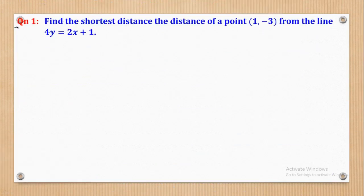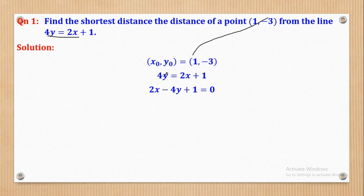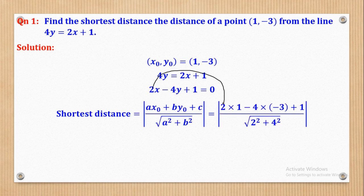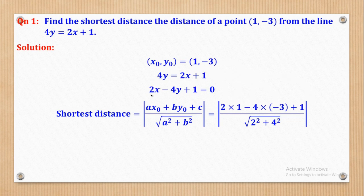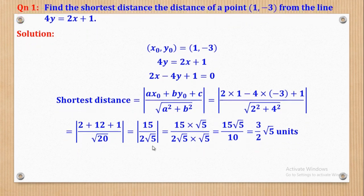Question 1: Find the shortest distance of a given point from a given line. Identify (x₀, y₀) from the point, then rearrange the line equation to ax + by + c = 0 form. Substitute into the formula — numerator is 2x₀ − 4y₀ + 1, denominator is √(2² + 4²). Simplifying gives a surd in the denominator, so rationalize to get the final distance. Question 2: Same procedure; substituting gives (3×4 + 4×(−7) − 9) / √(3² + 4²) = |−5| / 5 = 1, giving 5 units after magnitude.